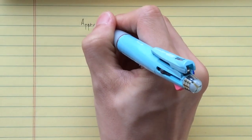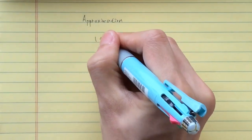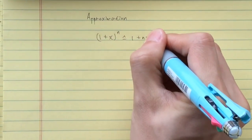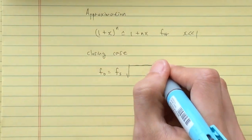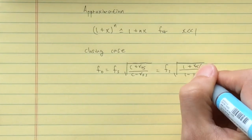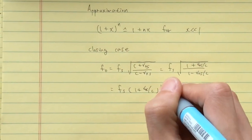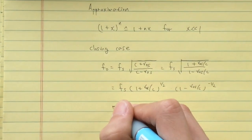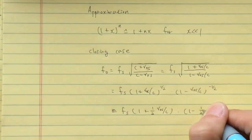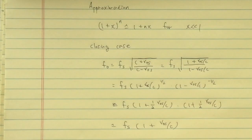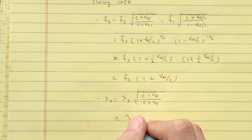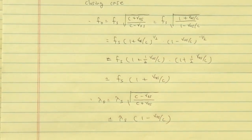We can approximate the formula when the relative velocity is much smaller than the speed of light. When the detector and the source are getting closer, the detected frequency can be approximated like this. The detected wavelength is approximated like this.